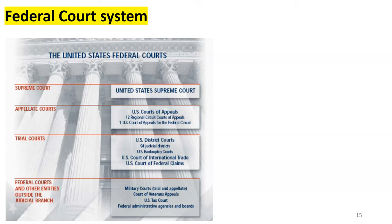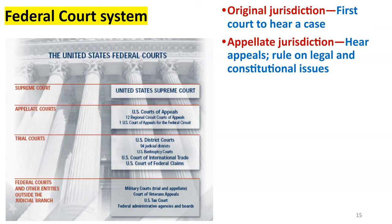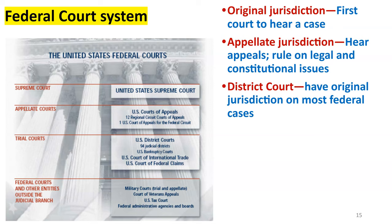The federal court system starts with the trial court — a district court. We have one in Rockville, Maryland. From there, in that district court, you would move up to appellate jurisdiction — the circuit courts of appeals. Original jurisdiction is the first court that's going to hear your case, usually in a district court on the federal level. You're not going to go right to an appeals court. Then from the district court you move to appellate jurisdiction. We have 94 judicial districts across the country, and 12 regional circuit courts of appeals.